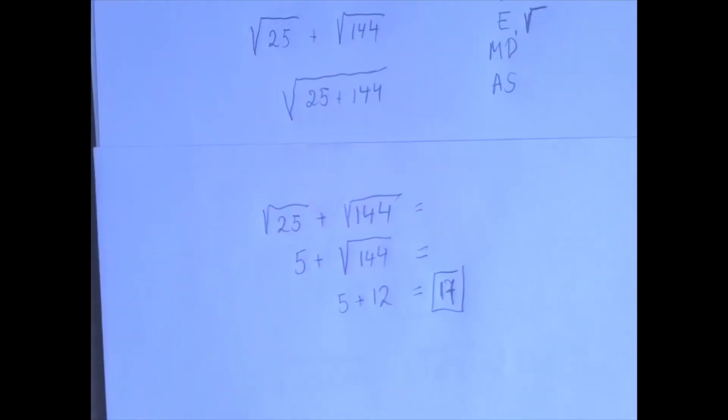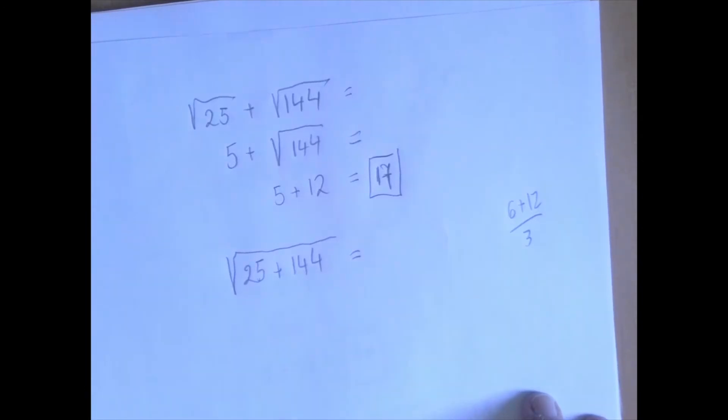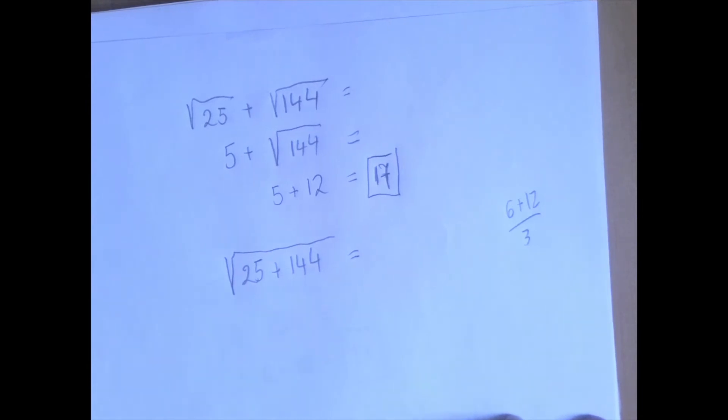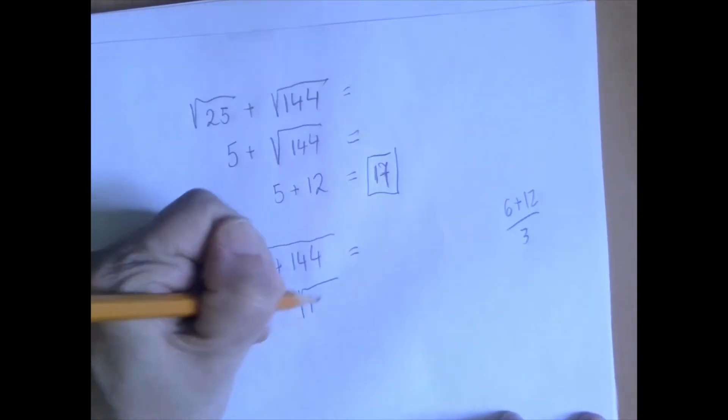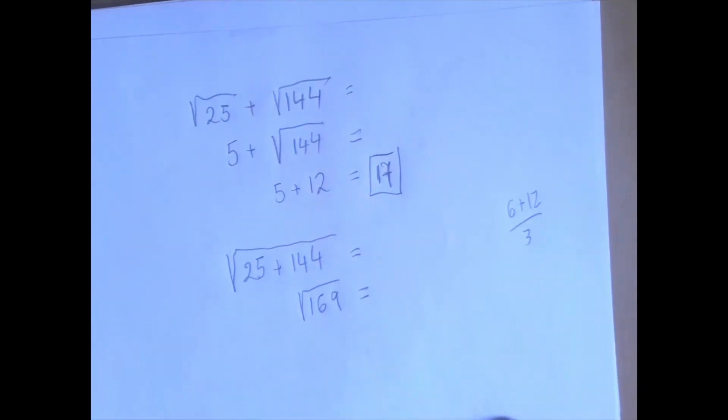Now let's see the second one. We first have to add the two numbers and then take the square root of the sum. So 25 plus 144 is 169, and square root of 169 is 13.